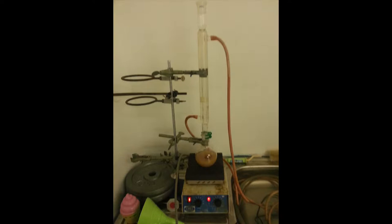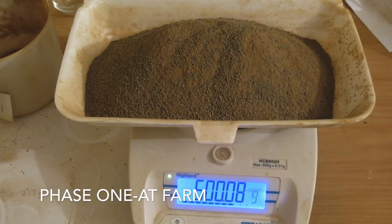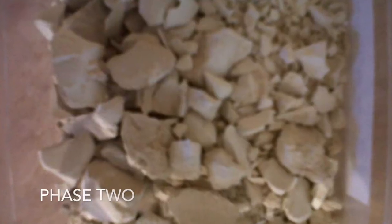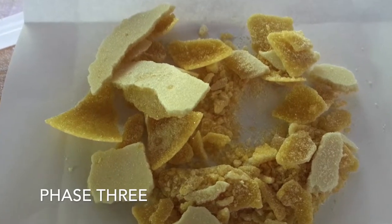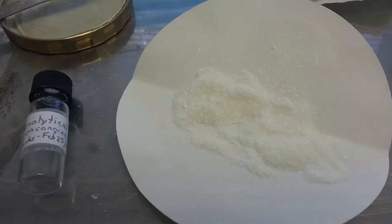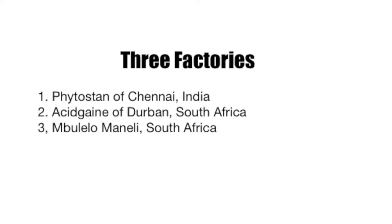Once pure, voacangine is easily converted into ibogaine using potassium hydroxide in boiling alcohol. The ibogaine is then purified and converted into the finished hydrochloride salt. This factory procedure can be broken down into four phases: isolation of the Voacanga total alkaloid, semi-purification of the voacangine, finished purification of the voacangine, and conversion of the voacangine into ibogaine with subsequent purification. The first phase is recommended at the Voacanga farm, and the last phase could be carried out close to the place of use if there were legal problems with shipping the final ibogaine. It should be easy to obtain voacangine from one of the three ibogaine factories. When I took 200 milligrams of voacangine, it just made me physically sick without any noticeable psychoactivity. The three factories that use Voacanga bark to produce ibogaine are the one belonging to Phytostan in Chennai, India; Acid Gain in Durban, South Africa; and Mubello-Minelli in South Africa.